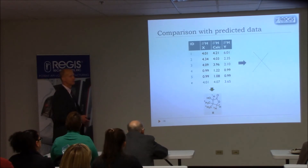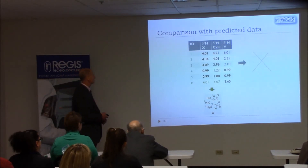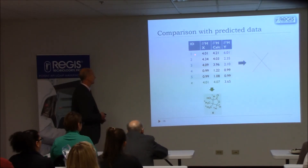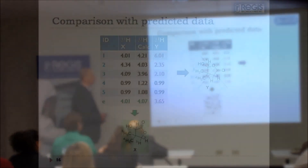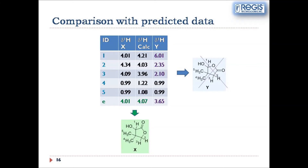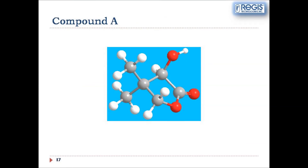We now go to the next step of our workflow and compare predicted data to observed data. From this exercise we find that structure Y has a large deviation for one of the protons compared to the calculated data, while structure X has a very good match. We discard structure Y and structure X remains as our single candidate. That is how the final structure looks, and it was elucidated without needing more expensive techniques such as X-ray analysis or high-level two-dimensional NMR analysis.